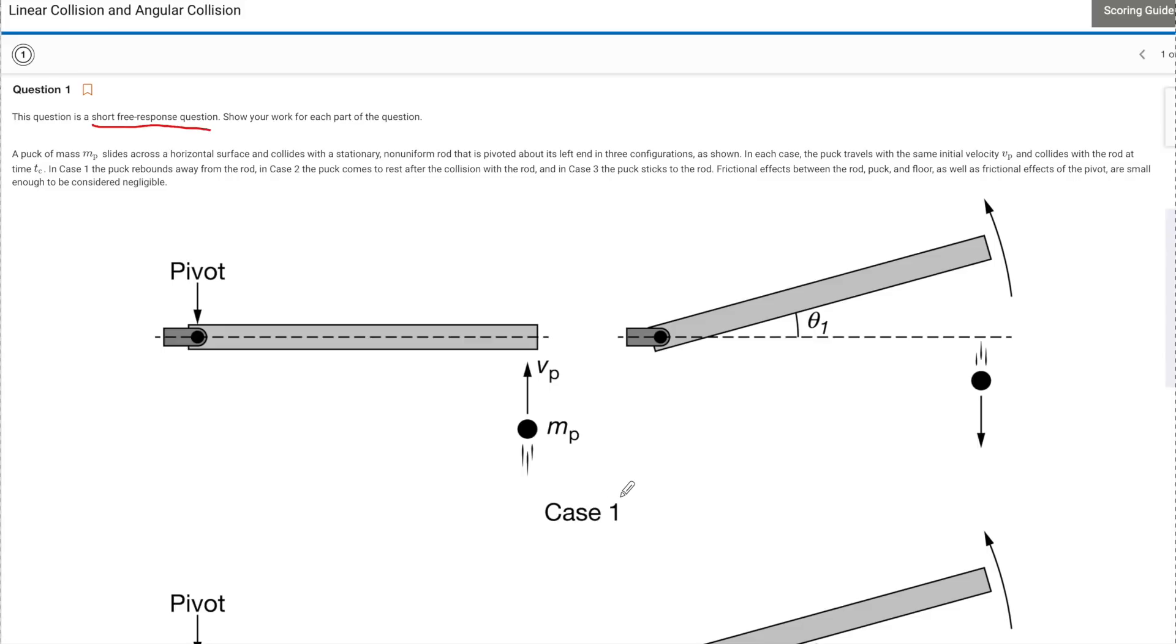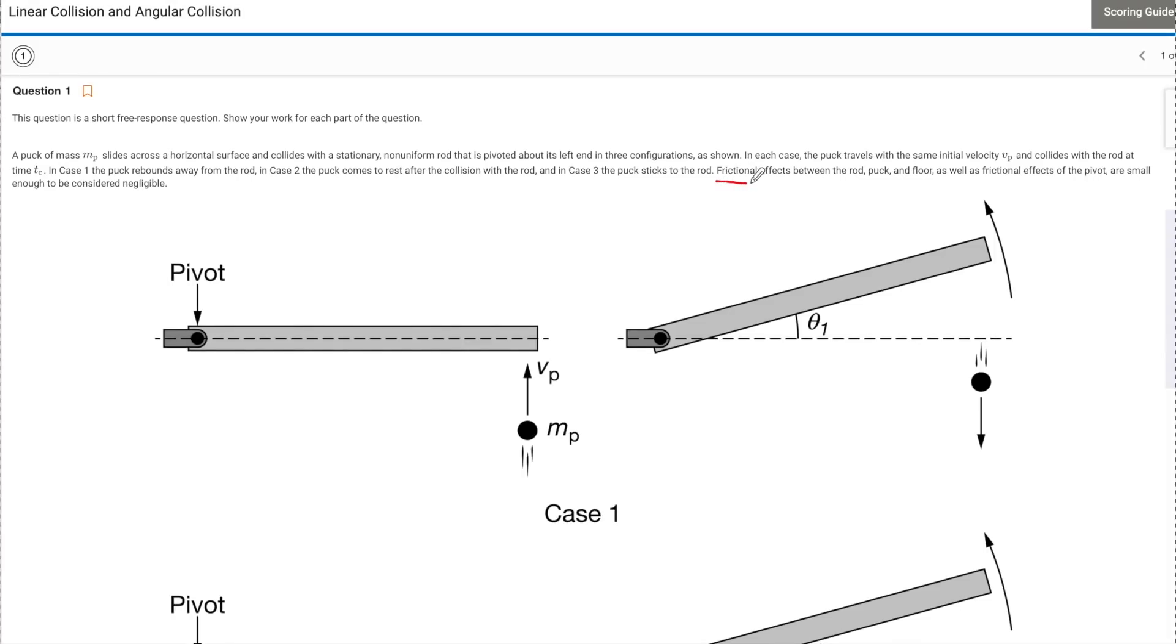Essentially what we have is three different cases where a ball with some mass is going to come and strike a rod which is then going to cause that rod to rotate. Another thing to tell us is that the frictional effect between the rod, the puck, and the floor are small enough to be considered negligible so we don't have to worry about that which means that this system is going to be conserved.